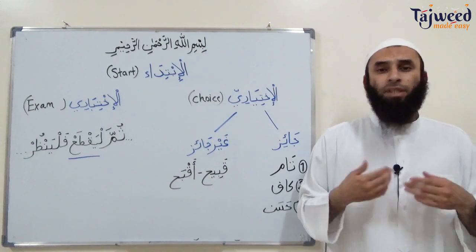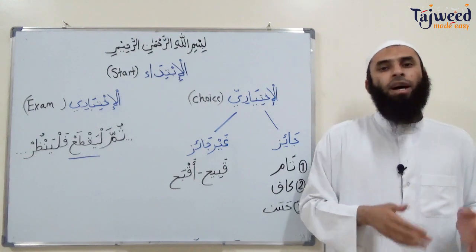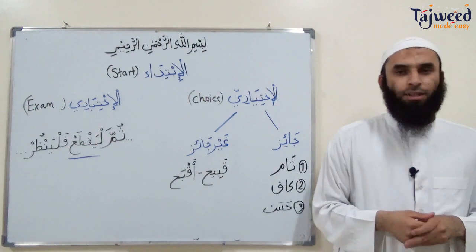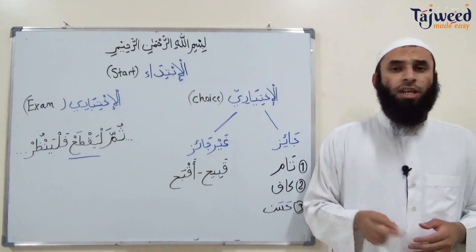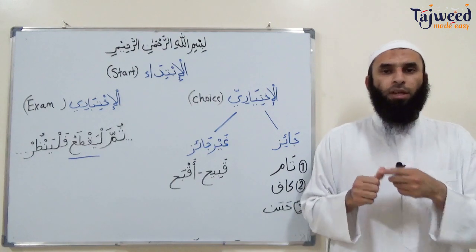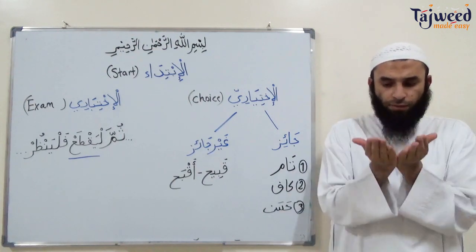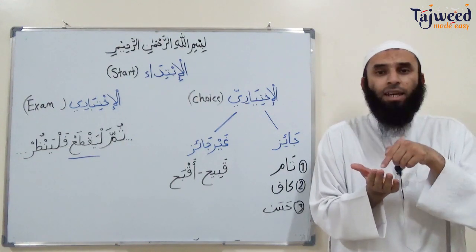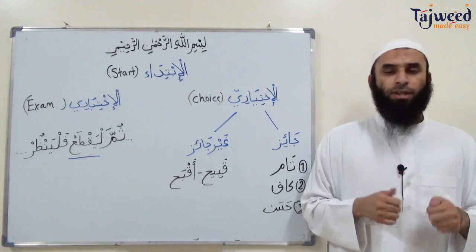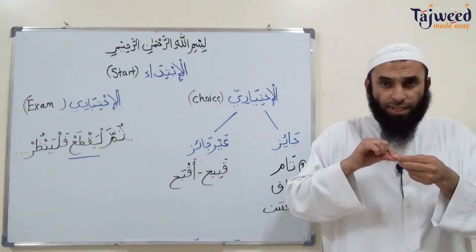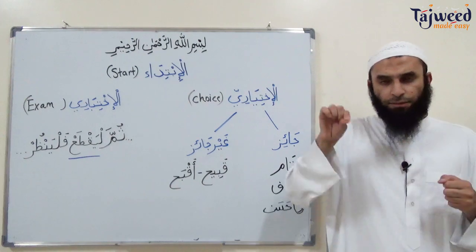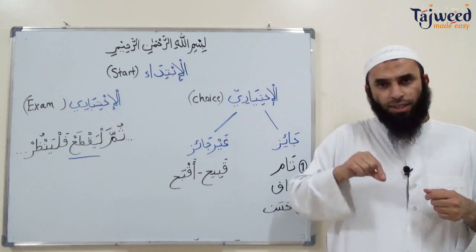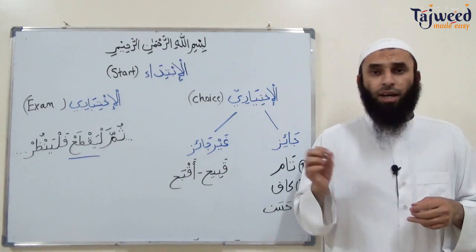We'll find out what Al-Ibtida is, its different categories, and how to apply this rule properly. Al-Ibtida means the start, to start a recitation. To start a recitation is of two types. Number one, to start completely from scratch — I'm opening a mushaf and I want to start from a particular ayah. Number two, reciting an ayah, finishing it, taking a short pause to renew my breath, and then starting the next ayah. This is also considered as Al-Ibtida.